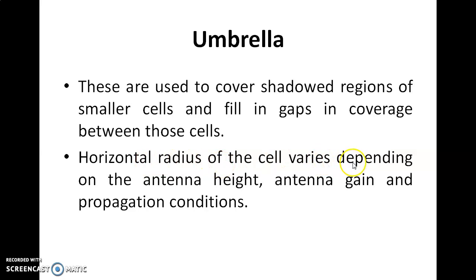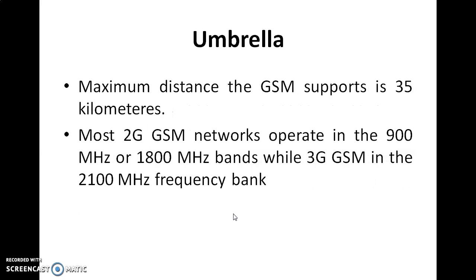The horizontal distance of a cell varies depending on the antenna height, antenna gain, and propagation conditions. These are the five cell sizes in our GSM architecture. The maximum distance GSM supports is 35 kilometers. For 2G networks, they operate on 900 or 1800 megahertz, while 3G networks operate on the 2100 megahertz frequency band.